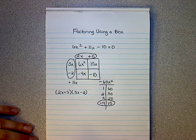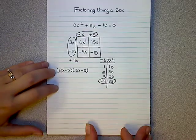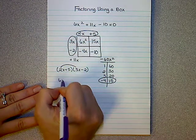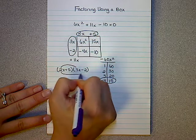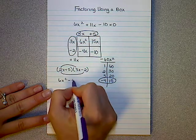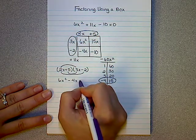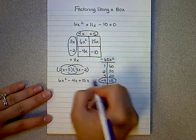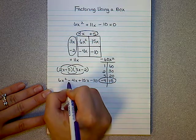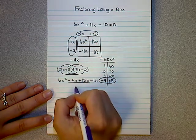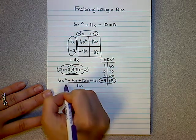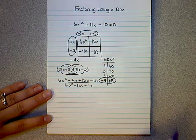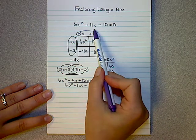Now if you're still iffy and you don't really think it worked, we can actually FOIL to check. 2x times 3x is 6x squared. 2x times negative 2 is negative 4x. Positive 5 times 3x is positive 15x. Positive 5 times negative 2 is negative 10. Negative 4x and 15x give me 11x. So I now have 6x squared with a positive 11x with a negative 10, which was what my goal was originally.